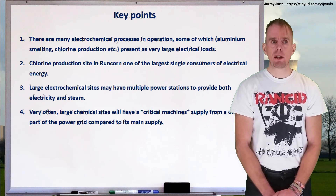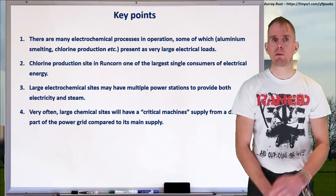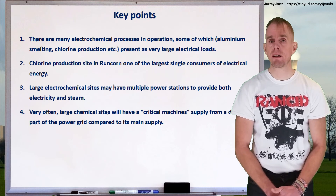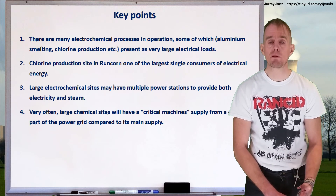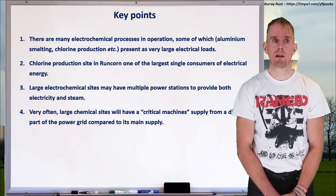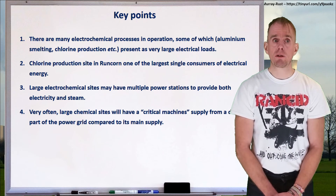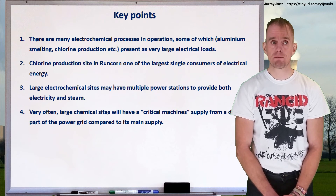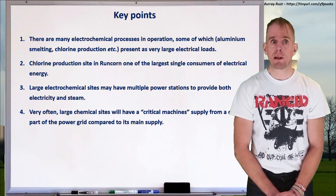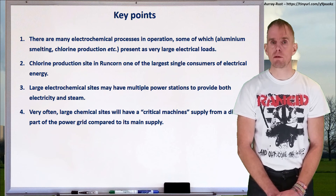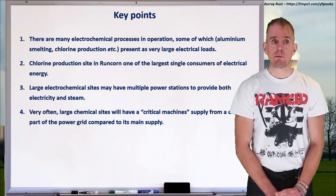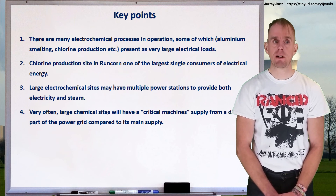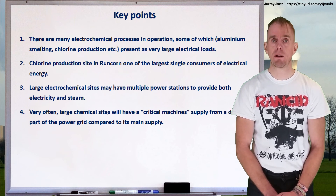To summarise: there are many electrochemical processes in operation, some of which present as very large electrical loads — specifically aluminium smelting and chlorine production. The chlorine production site in Runcorn is one of the largest single consumers of electrical energy in the UK. Large electrochemical sites may have multiple power stations providing both electricity and steam, and very often these large sites will also have a critical machine supply sourced from a different part of the power grid compared to their main supply.